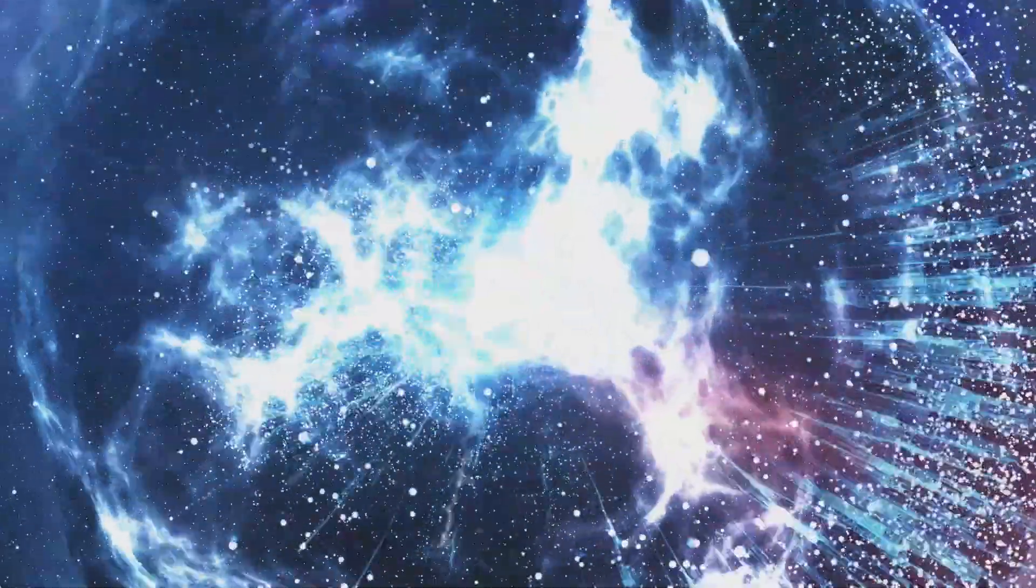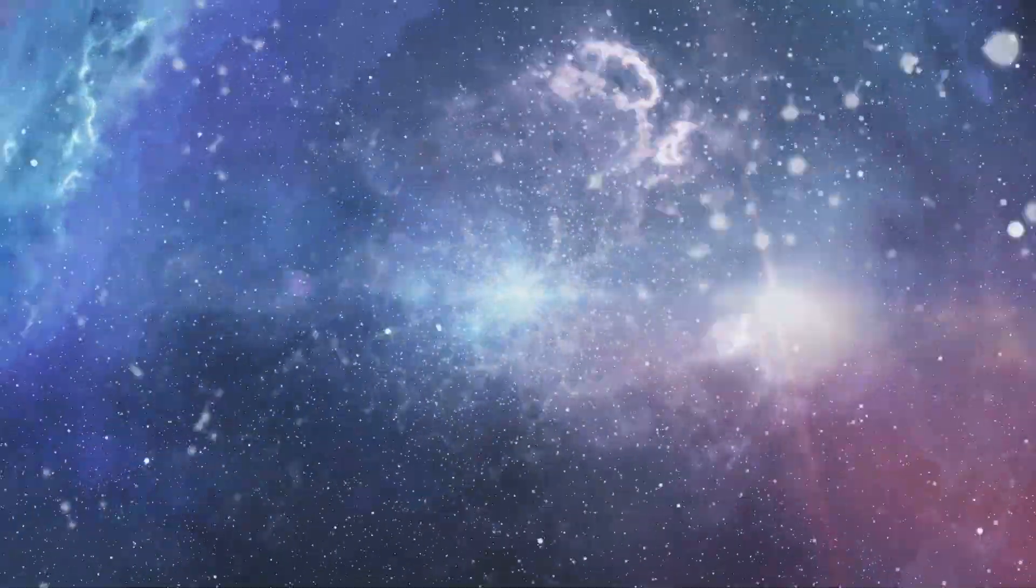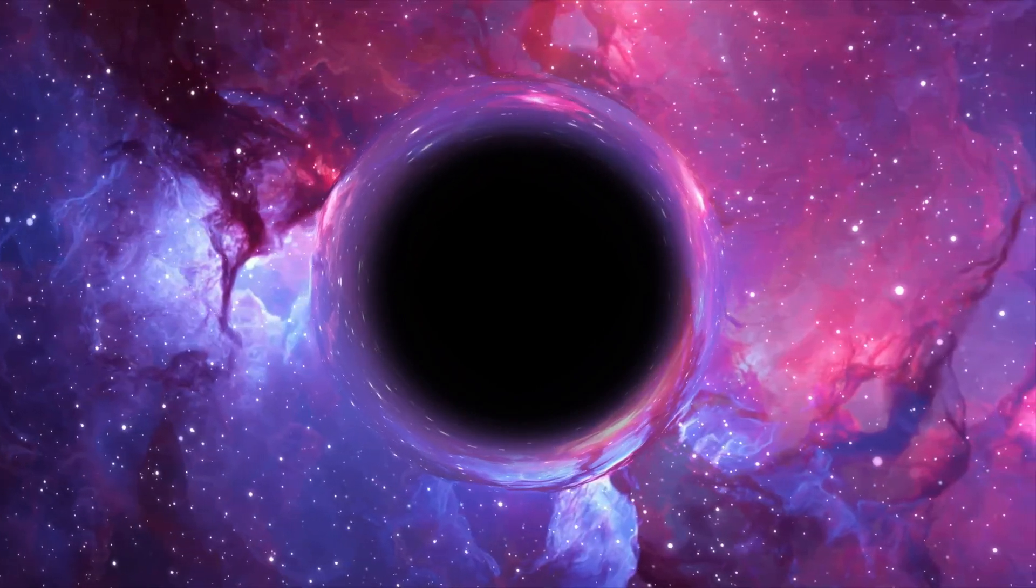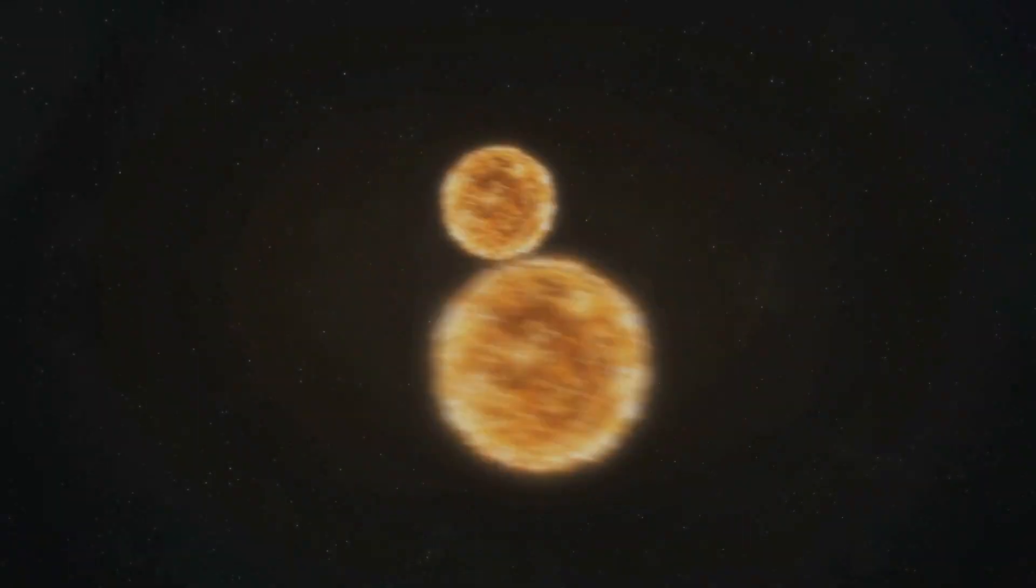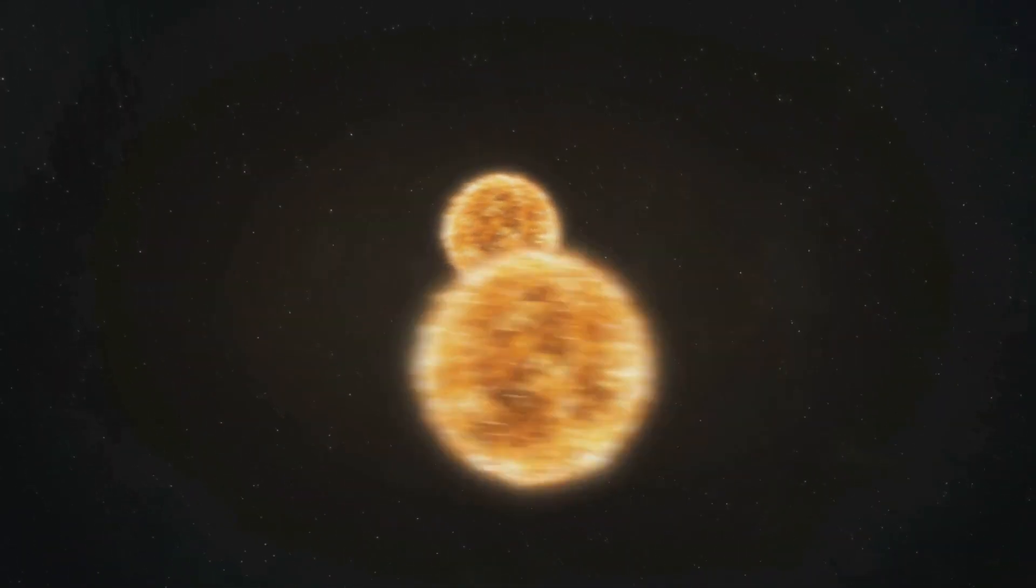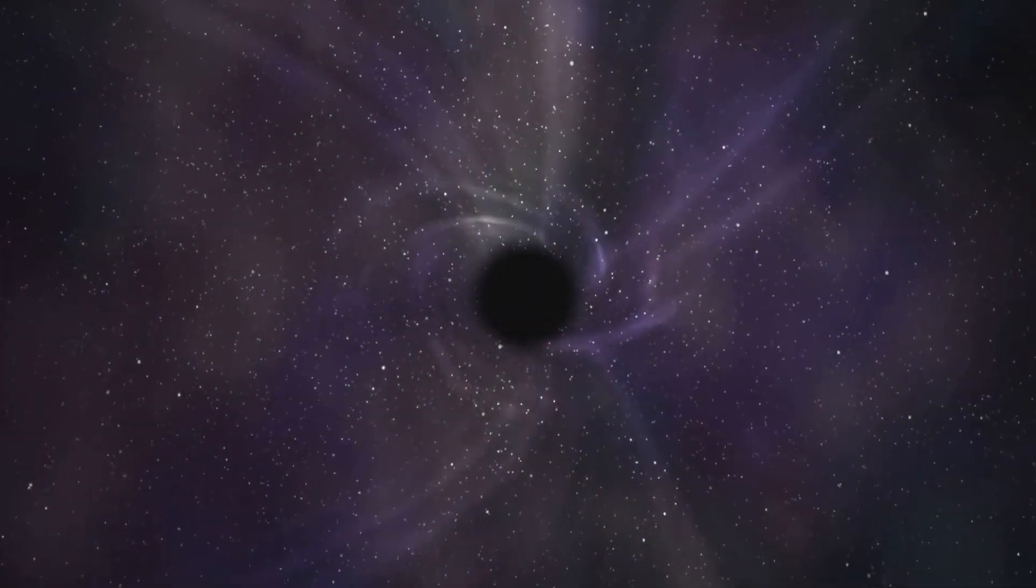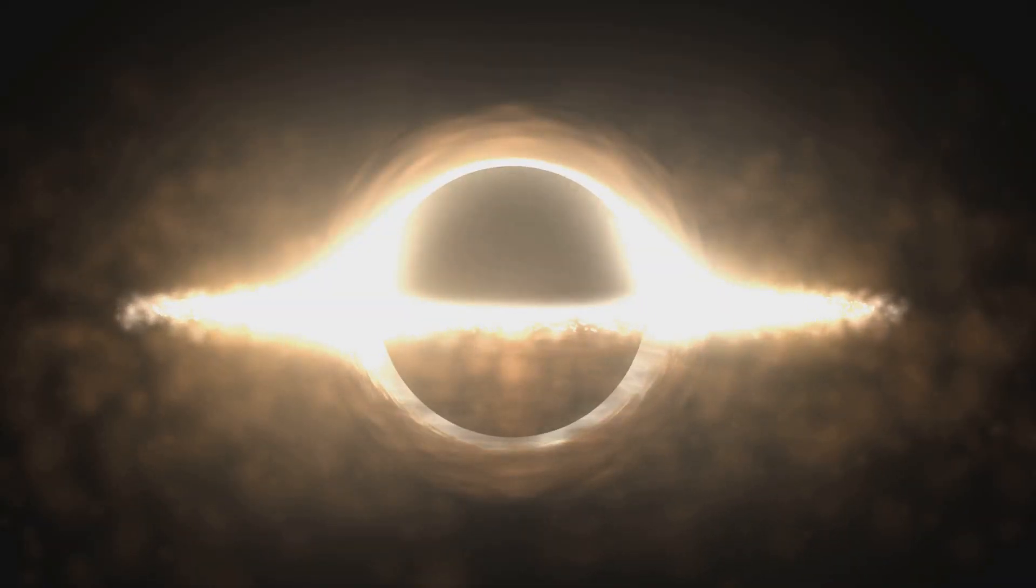These stellar-mass black holes typically range from about 3 to 20 times the mass of the Sun. But how can we detect something that doesn't emit any light? Many stellar-mass black holes we've discovered are in binary systems, where a black hole orbits a companion star. The black hole pulls gas from the star, creating a glowing disk of gas that spirals inward while releasing X-rays. These X-rays give astronomers a way to spot black holes that would otherwise be invisible.